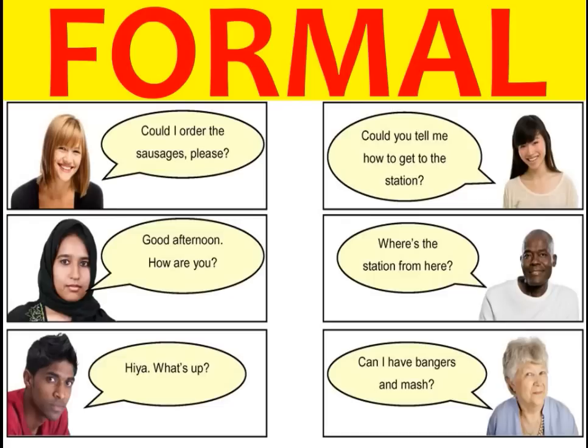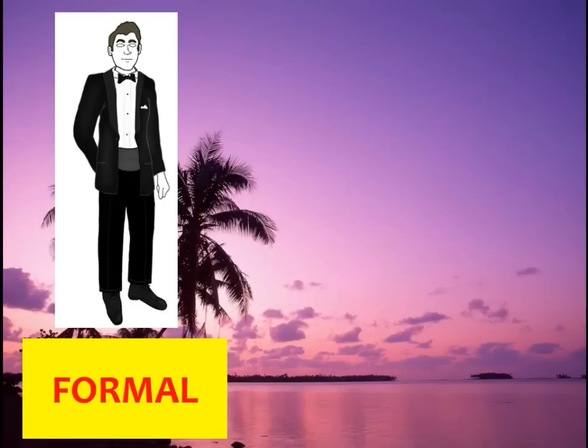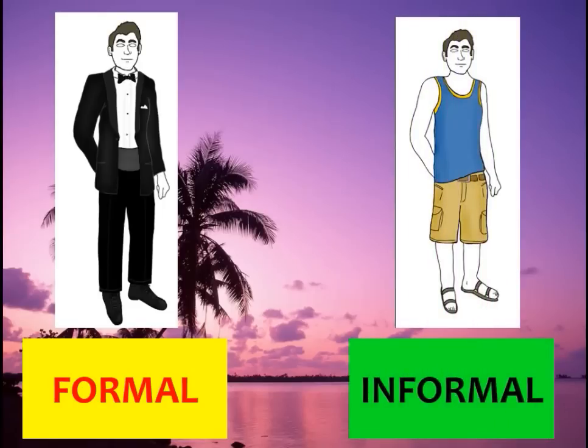For example, 'Could I order the sausages please?' — that is formal. The old lady saying 'Can I have bangers and mash?' — that's informal. 'Good afternoon, how are you?' is formal; 'Hey, what's up?' is informal. 'Could you tell me the way to get to the station?' — formal; 'Where's the station from here?' — informal. If you're struggling with formal versus informal, just think of it like a dress code: formal is a smart suit, informal is flip-flops and shorts.